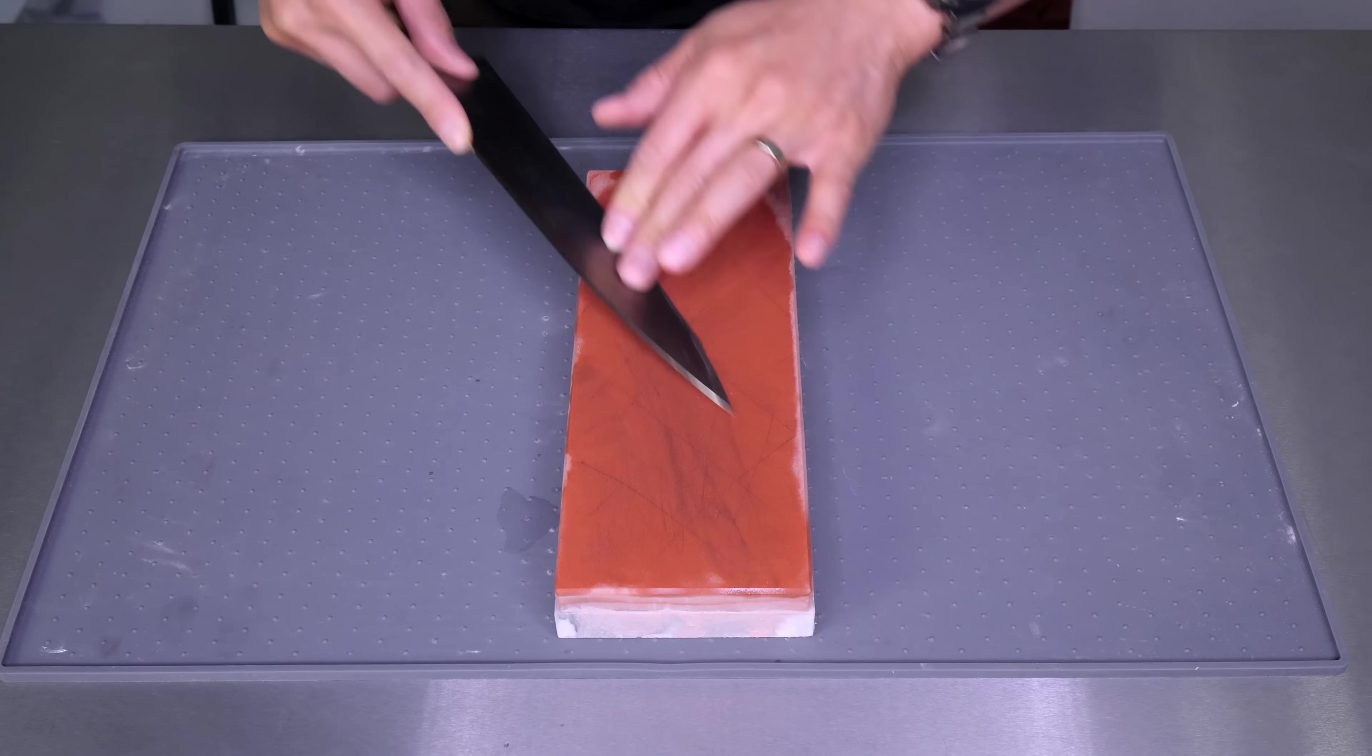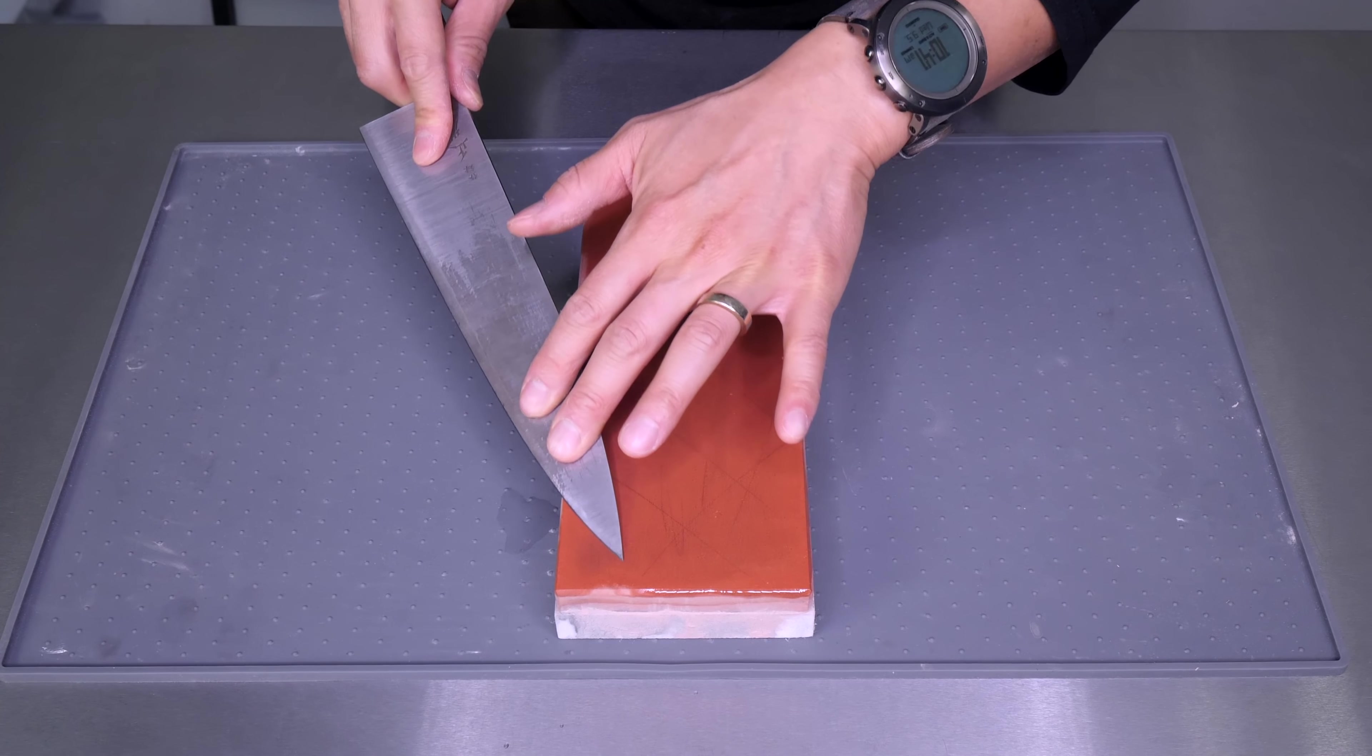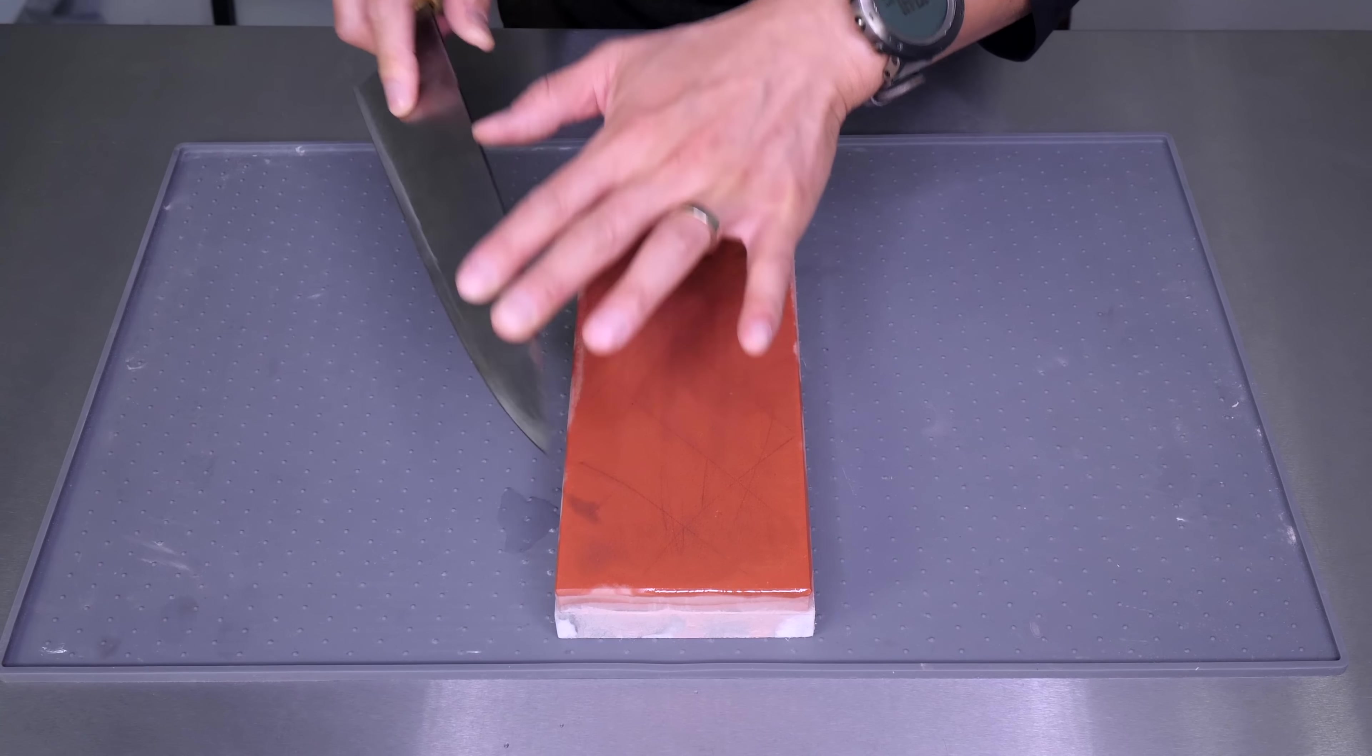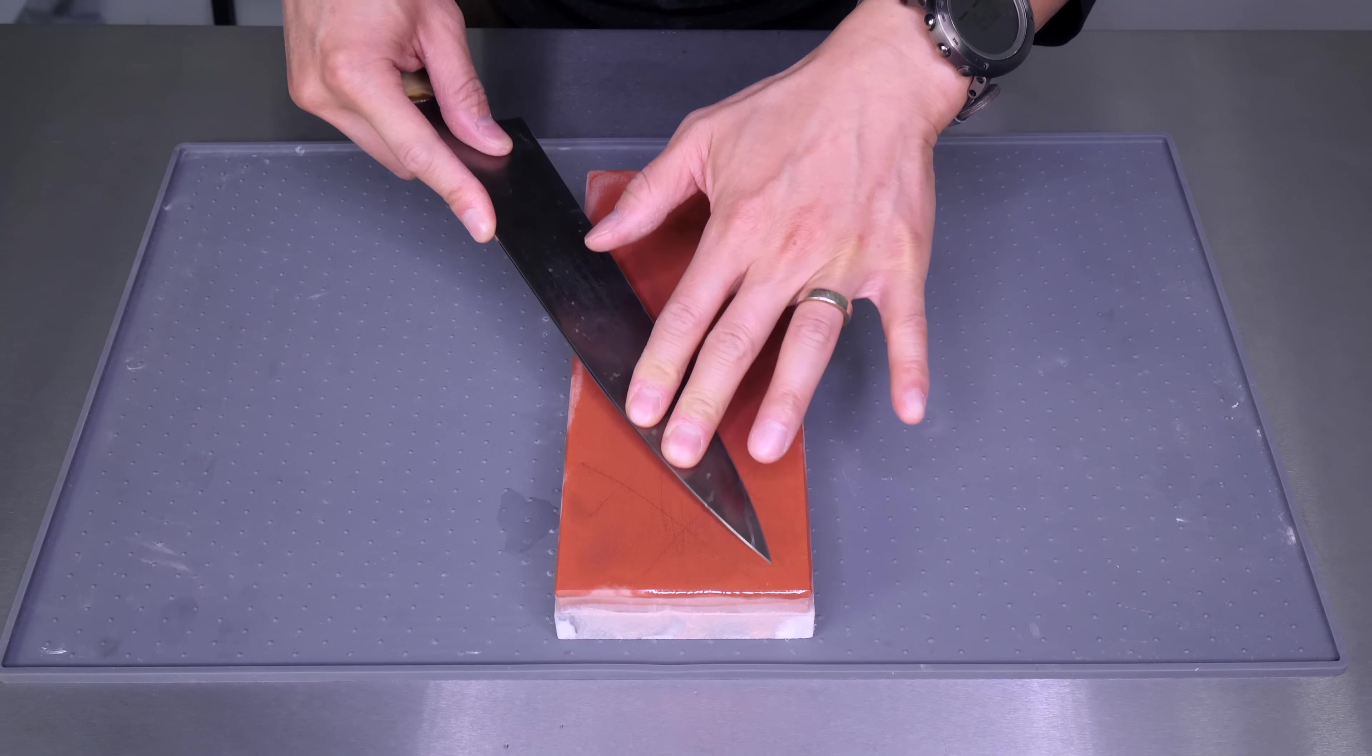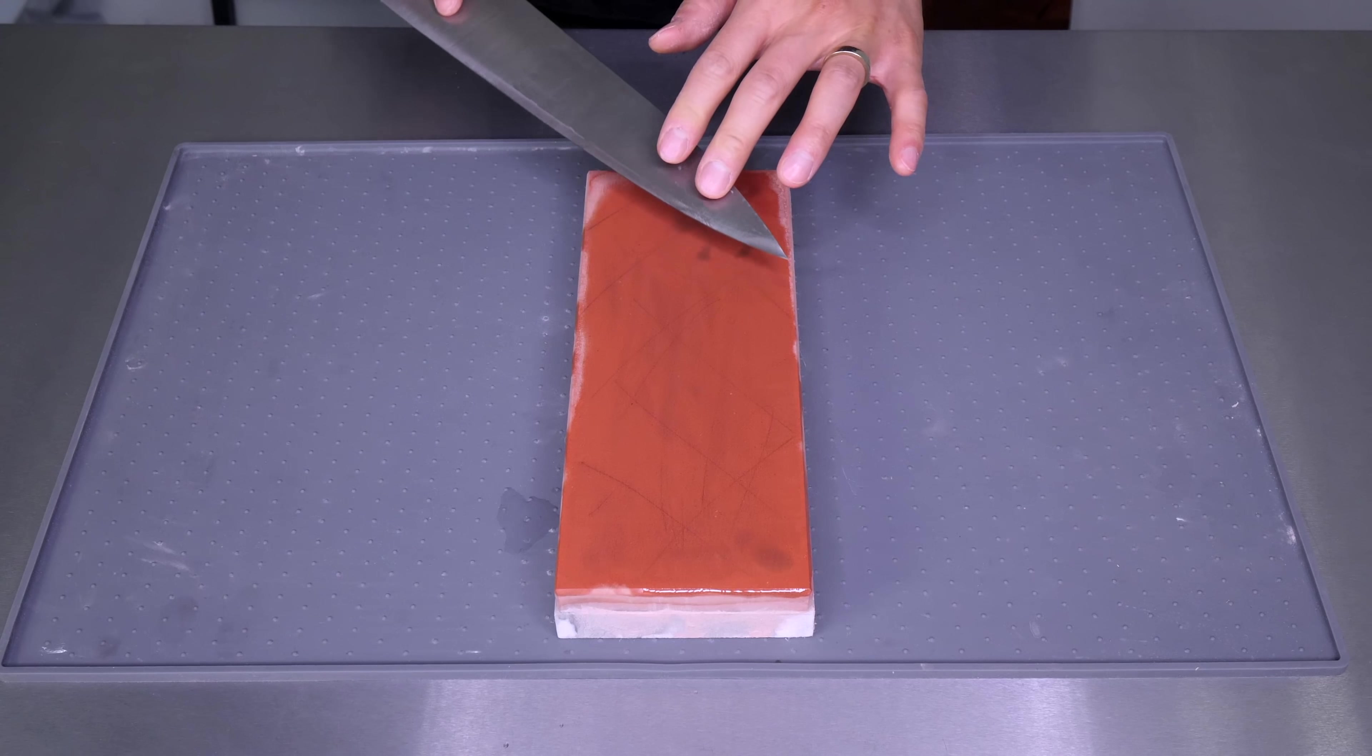Tip number four: remember to go back and forth between the left side and the right side. It's very important that we keep our bevels the same as much as possible. That's not a really big problem because it's relatively easy to fix. It's more an eyesore than a performance hindrance, but it's the easiest way to maintain your knife's cutting edge profile.